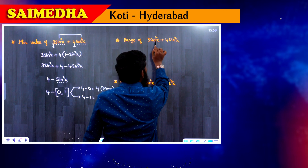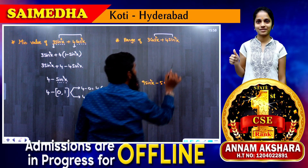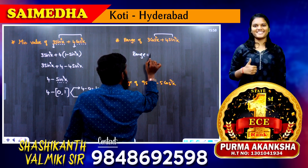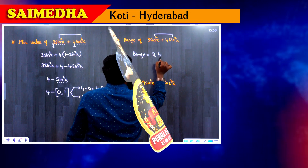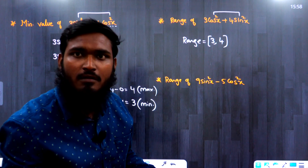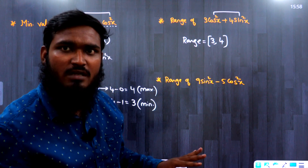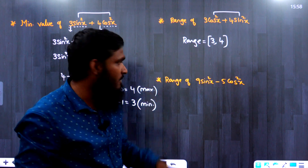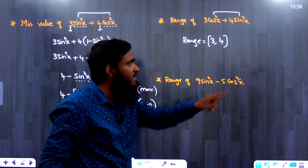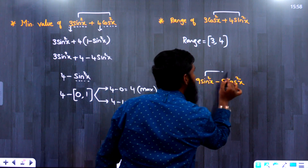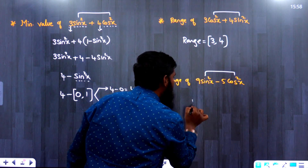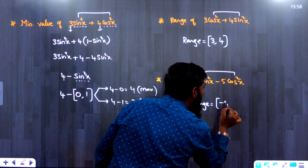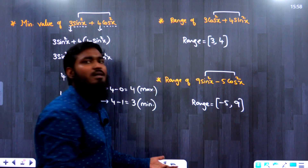Let's apply this. Range of 3cos²x + 4sin²x: it's a sin² and cos² combination, so the range is [3, 4] — minimum value 3, maximum value 4. Next, range of 9sin²x − 5cos²x: again a sin² and cos² combination, so the range is [−5, 9] — minimum value −5, maximum value 9.